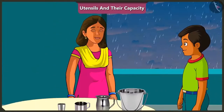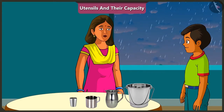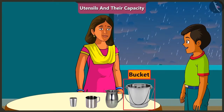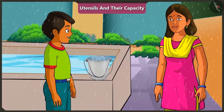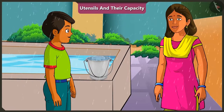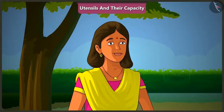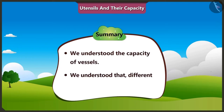Well done, Mishtu. Which vessel should we use to collect rain water? We should collect it in this bucket because the bucket has the highest capacity, and with the help of this bucket it will be possible to fill the tank much faster. Well said. So children, today along with Mishtu we understood the capacity of vessels and we also understood that different vessels have different capacity.